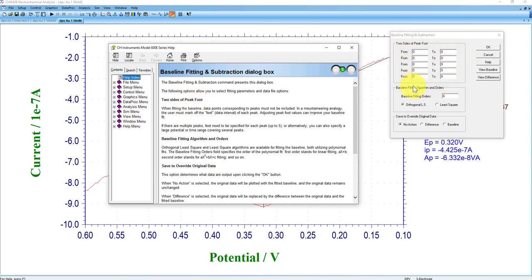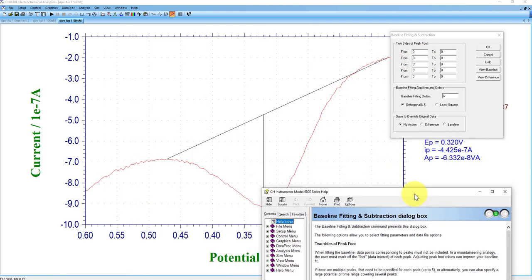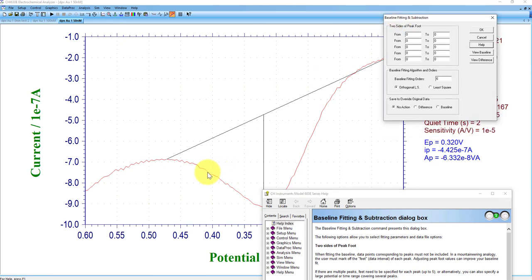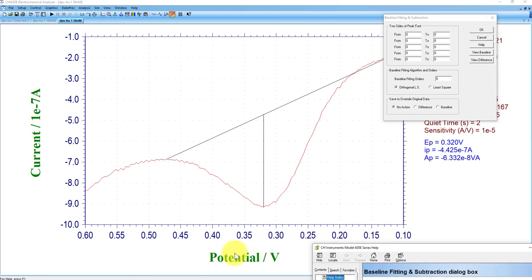And so really what that's saying is that you need to articulate to the software where the peak is and where it's not. And so you're just putting in values of potential, a sort of range where you want to capture this peak. And there's multiple entries because sometimes you want to fit a baseline where there's multiple waves. In this case, there's only a single wave, and so we only need this first entry.